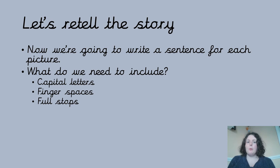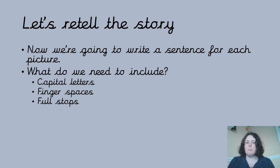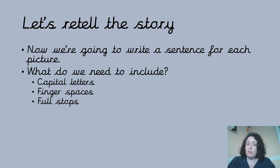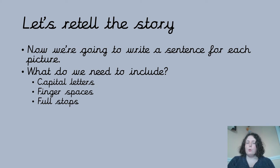What we're going to do now is write one sentence — just one sentence — about each picture. Remember what we need to include: capital letters, finger spaces (it can't all just be one long word, otherwise no one can read your story), and full stops at the end of the sentence. Full stops don't just go at the end of the line — they go at the end of the sentence. And once we've put a full stop, the next word needs to start with a capital letter. We've done lots of practice of this in Year 2, so hopefully you're an expert by now.